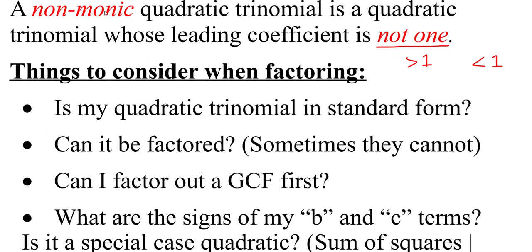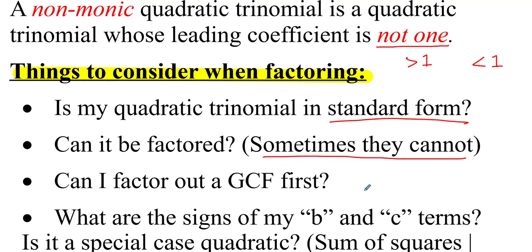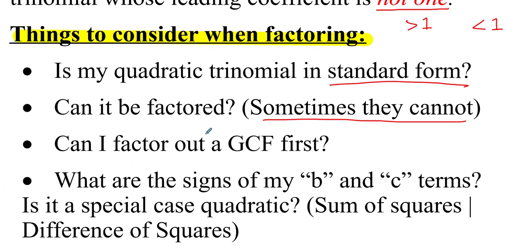We want to consider these things when we start factoring. First, we take a look at what's in front of us and ask ourselves: is it in standard form? That is hugely important — always put it in standard form. Next, can it even be factored? Sometimes they cannot. Remember, we need two numbers to multiply to make C that also add up to B. If they don't do that, we cannot factor it. We also want to factor out a GCF — remember from 9.1 — if you can find a GCF, we always take those out first.